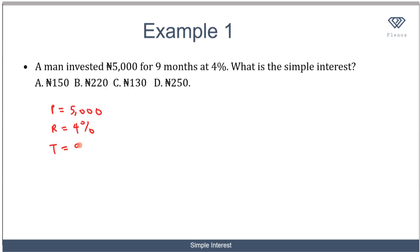As I've told you, the months must be in years, so we have to convert to years by dividing by 12. To the lowest term, 3 will go in 9 three times and 3 will go in 12 four times, giving us 3/4 years.